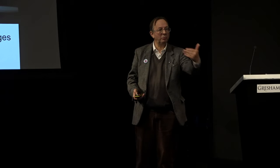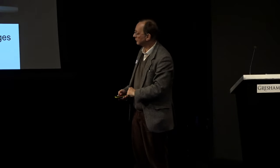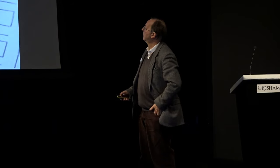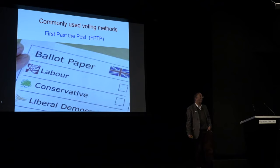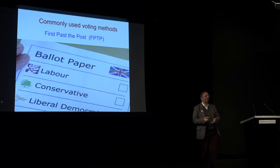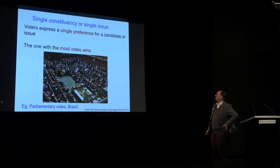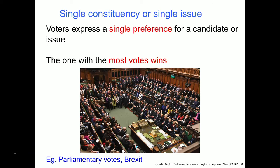Now I want to describe two methods we'll all be familiar with: First Past the Post, FPTP. This is what we'll all face on the 12th of December. The normal version used in Parliament, or in Brexit, is where you have a single vote with potentially multiple candidates, you express a single preference, and the candidate with the most votes wins.